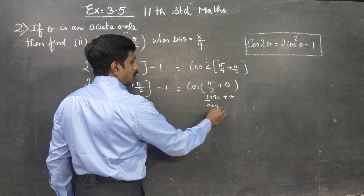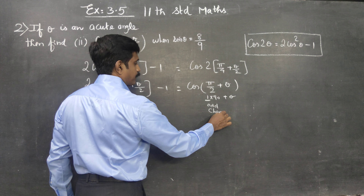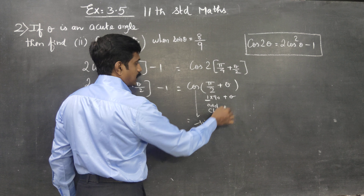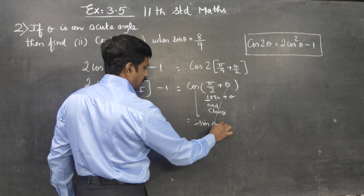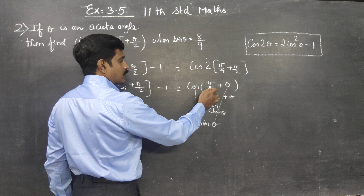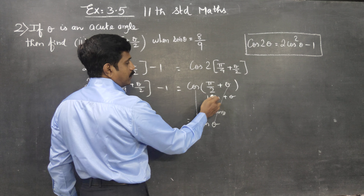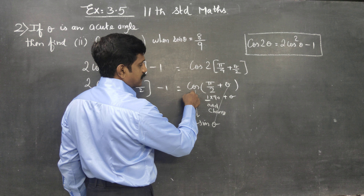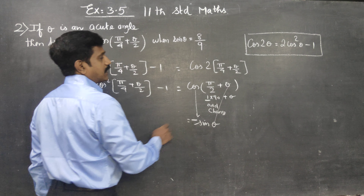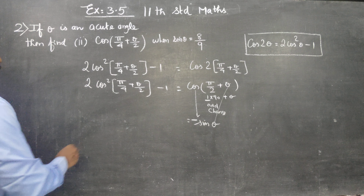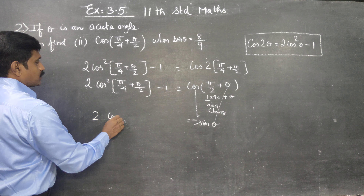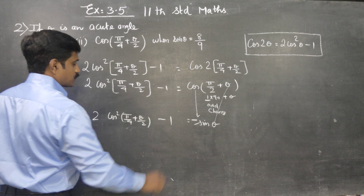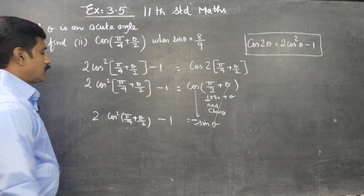Substituting theta with pi by 4 plus theta by 2: the value of cos square theta becomes cos square of (pi by 4 plus theta by 2). So 2 cos square (pi by 4 plus theta by 2) minus 1 is equal to cos 2 times (pi by 4 plus theta by 2).